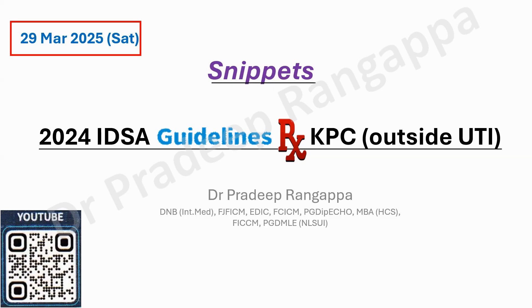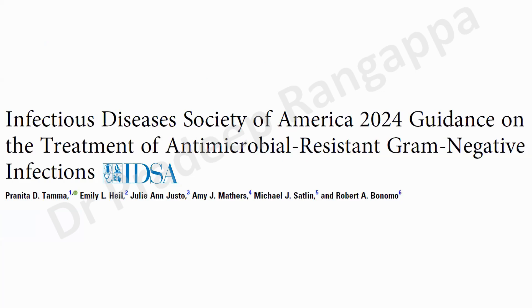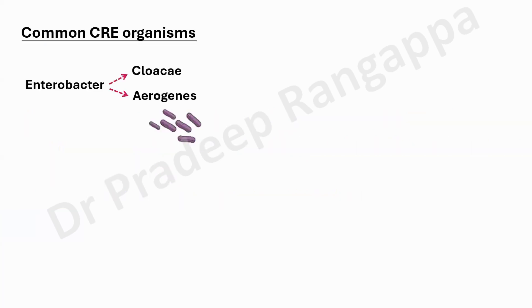For this, there is an Ambler classification which I will give you a brief on before we embark on what the guidelines say, because the guidelines are pretty simple. Again to reiterate, this came in 2024. It's around a 54-page document. I request all of you to go through it once.